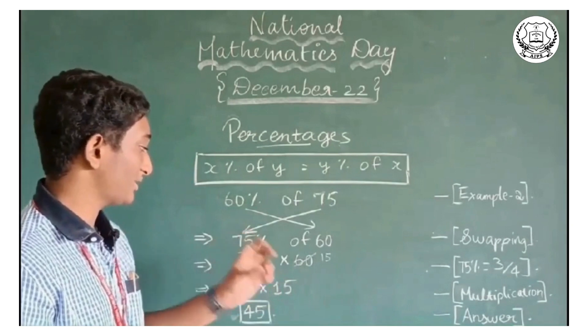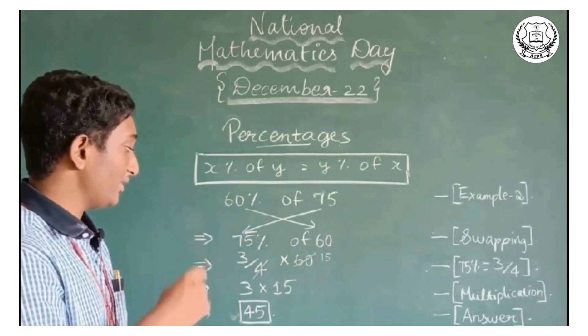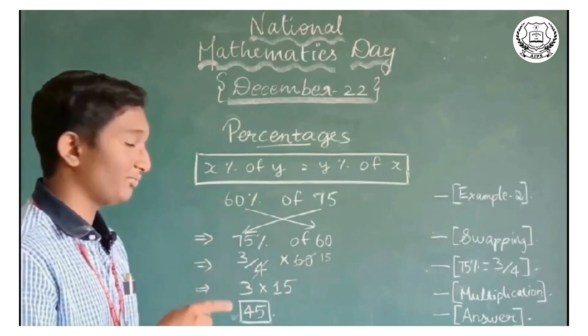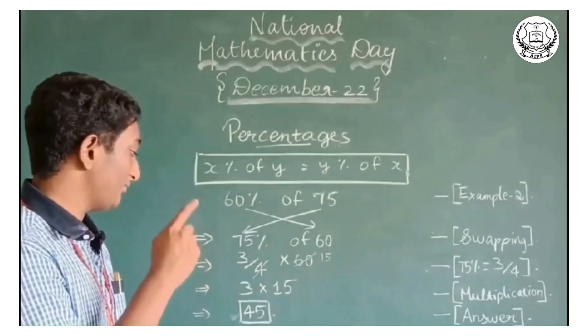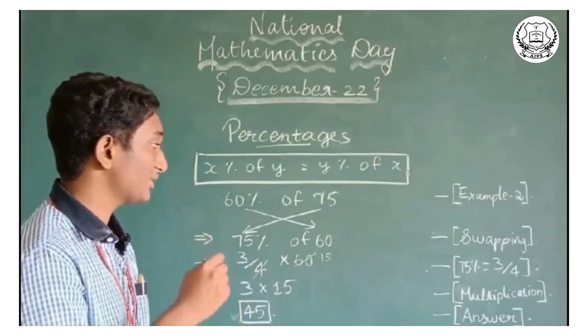When we have to find 75 percent of a number, we can multiply the number by 3/4, in which 4 and 60 get cancelled and 4 times 15 equals 60. When we multiply 15 by 3, we get the answer 45, which is the final answer of 60 percent of 75.